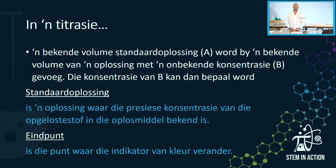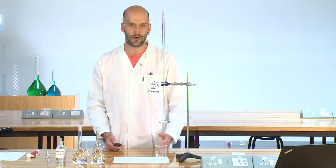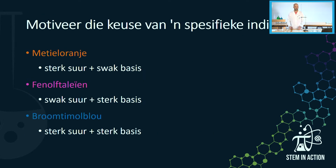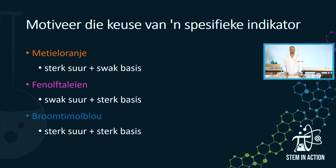A standard solution is a solution where the precise concentration of the dissolved substance in the solvent is known. Part of the titration is our endpoint. The endpoint is the point of the indicator color change. You must make a list of all the apparatus we will use, or label them from a diagram. Describe the procedure of the standard solution, and how we will prepare the standard solution. Describe the procedure of carrying out the titration.